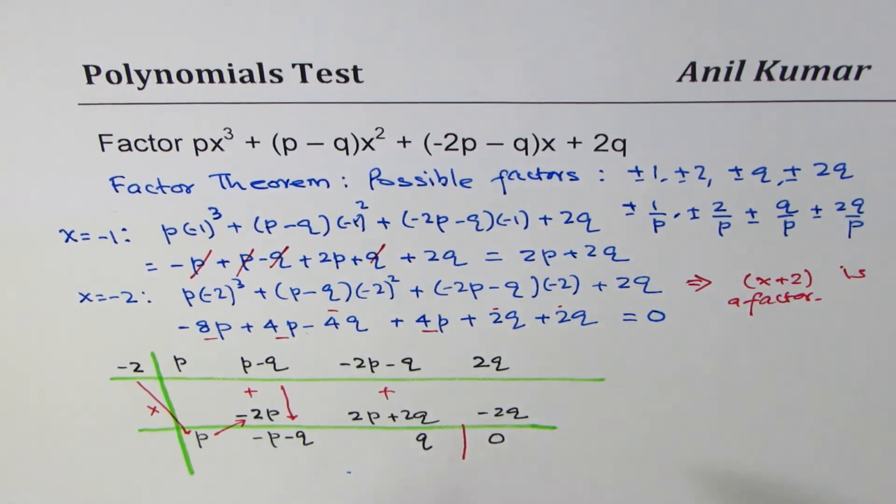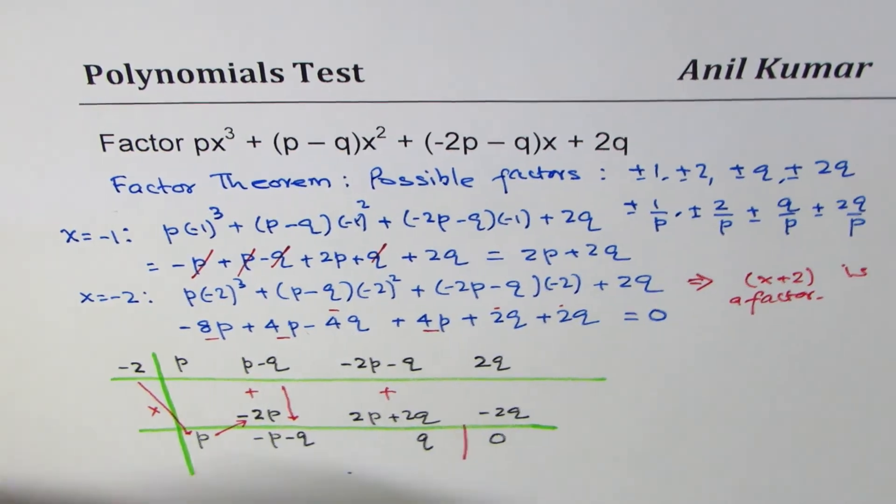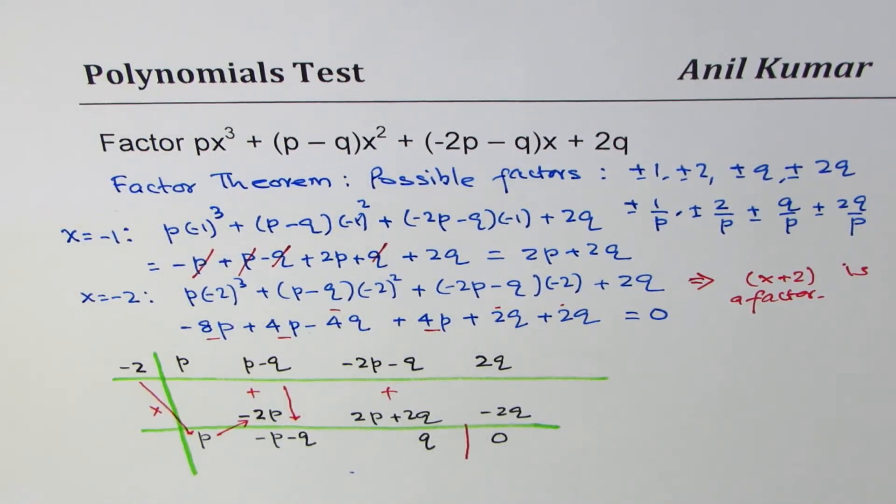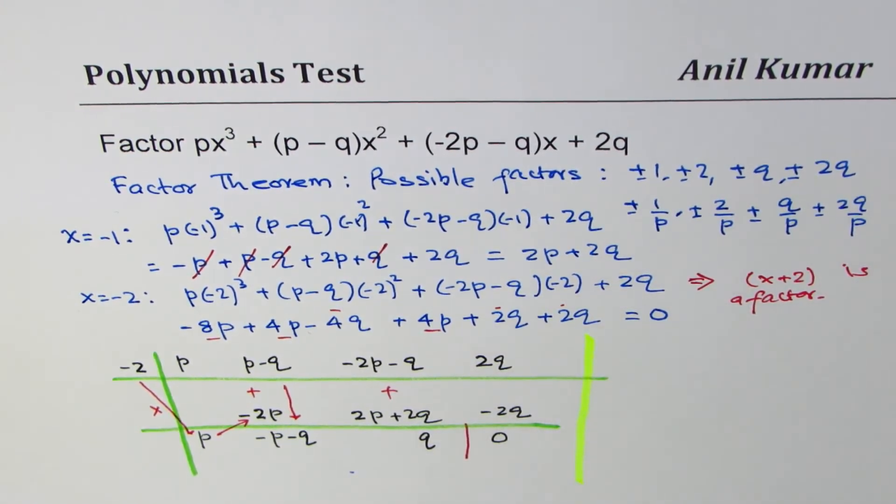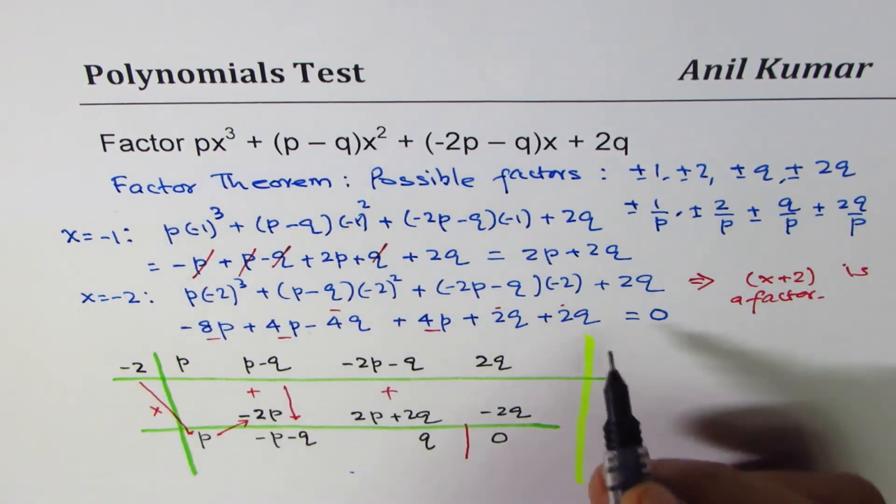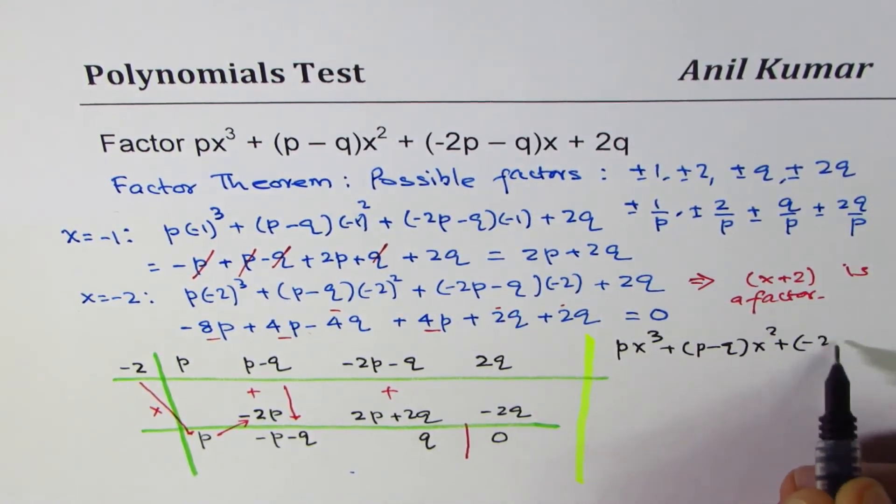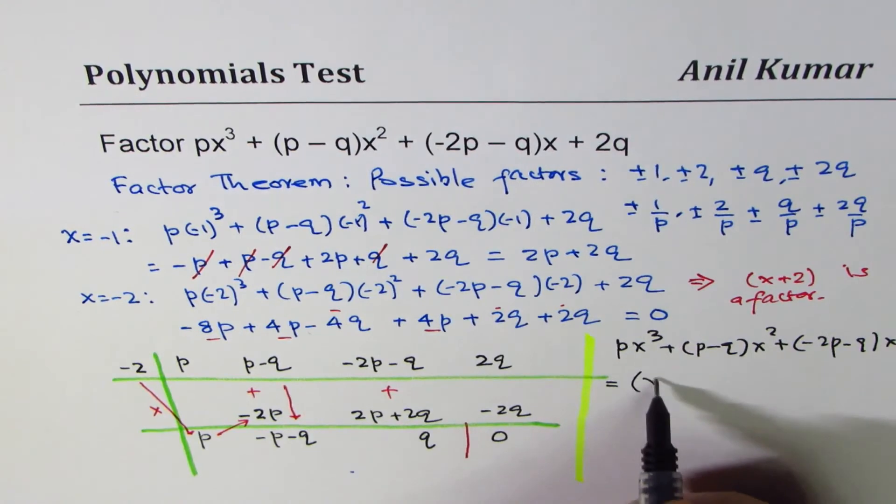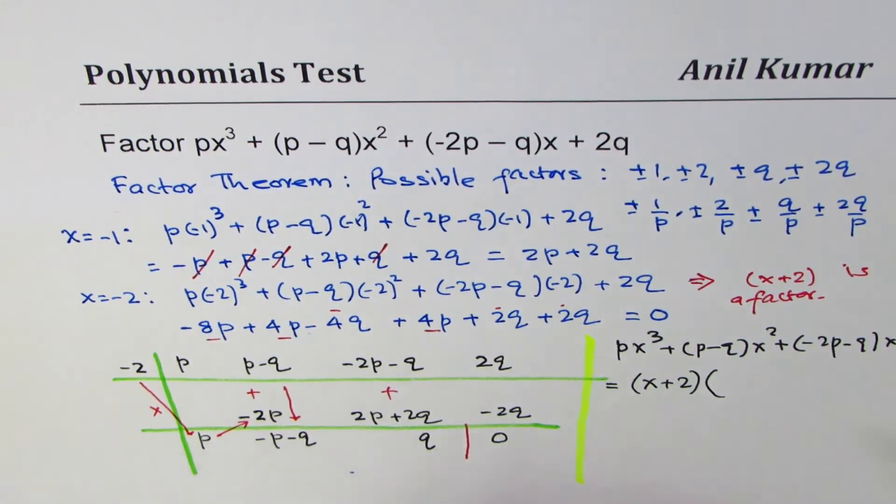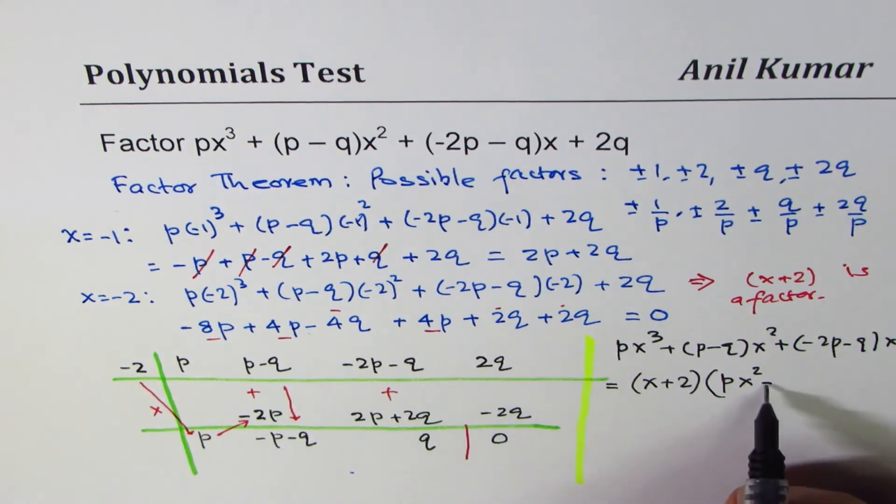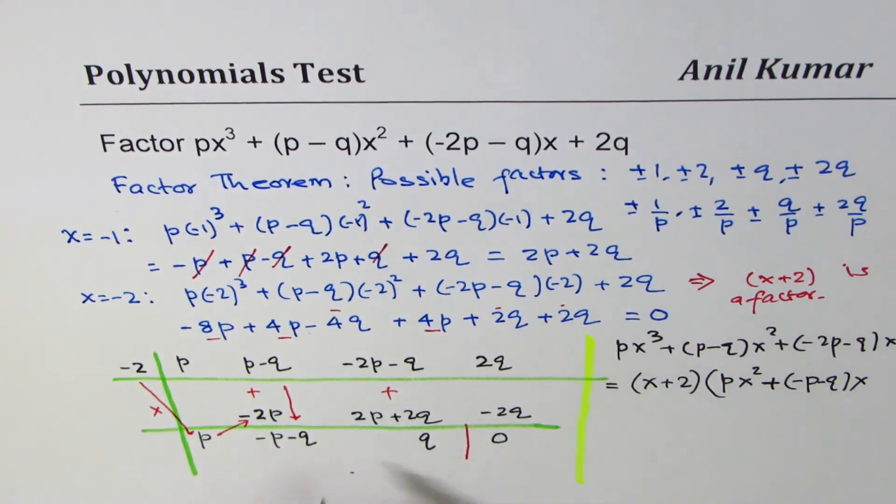So we get another factor here. And of course, the coefficients will be 1 lower than these. So we could write this as, let me write down on the right side the factor. So we have done the factoring very clearly. So we could write our answer here as px³ + (p - q)x² + (-2p - q)x + 2q can be written as: first factor is (x + 2), and then we have px², this is minus, so we could write +(−p − q)x, and then q, plus q the constant.